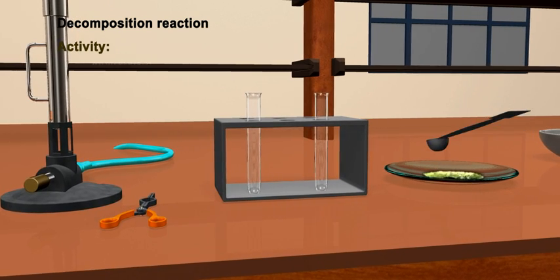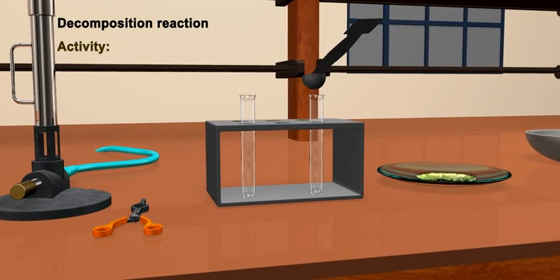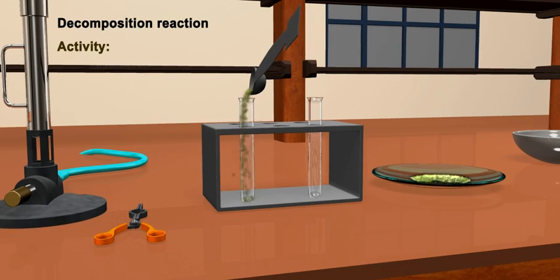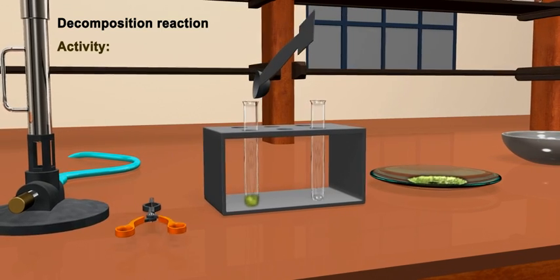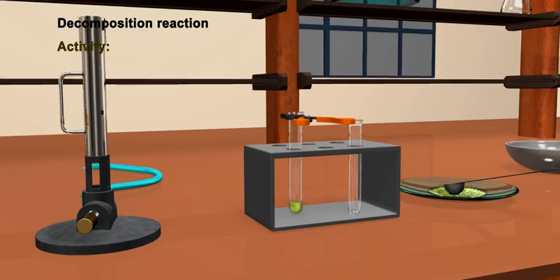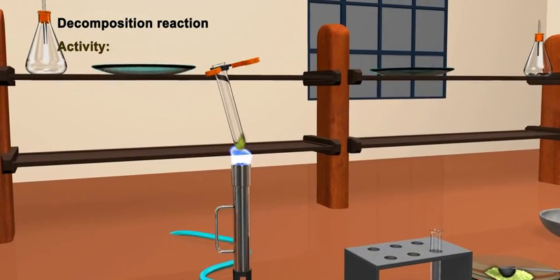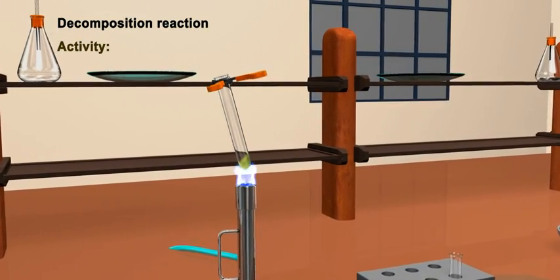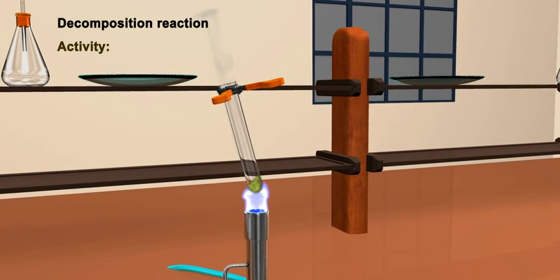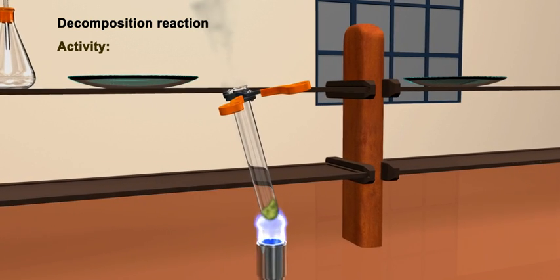Take some ferrous sulphate crystals in a dry boiling test tube. Note the green colour of the ferrous sulphate crystals. Heat the boiling tube over the flame of a burner and observe the colour of the crystals after heating.